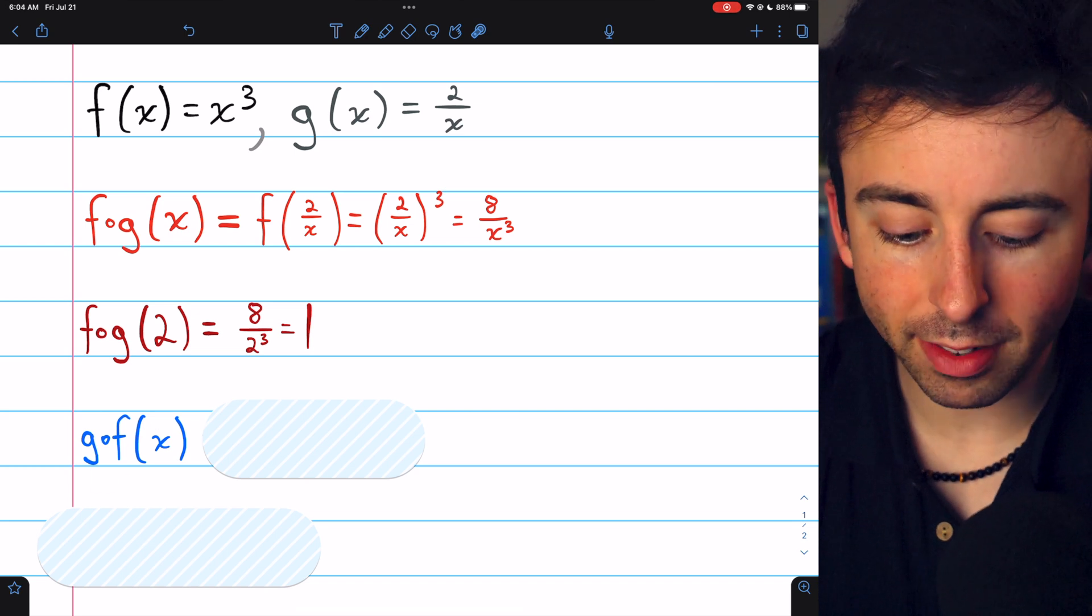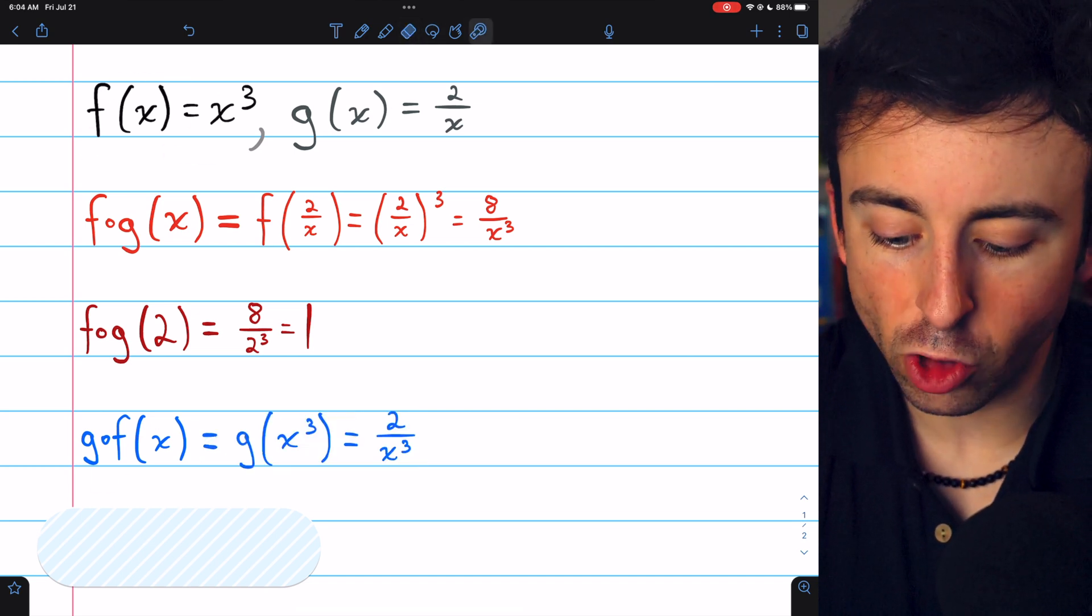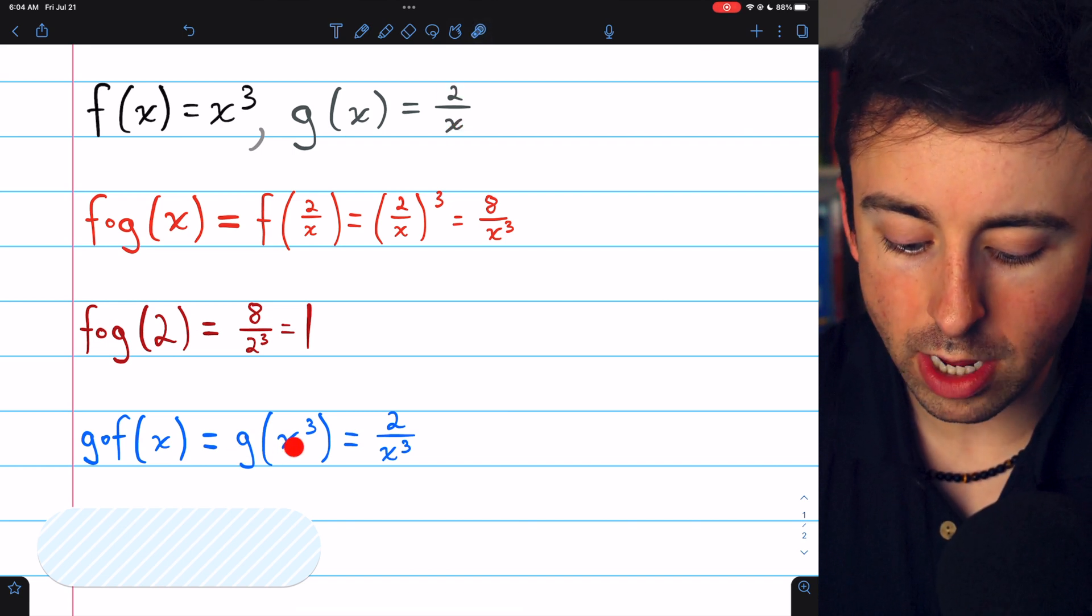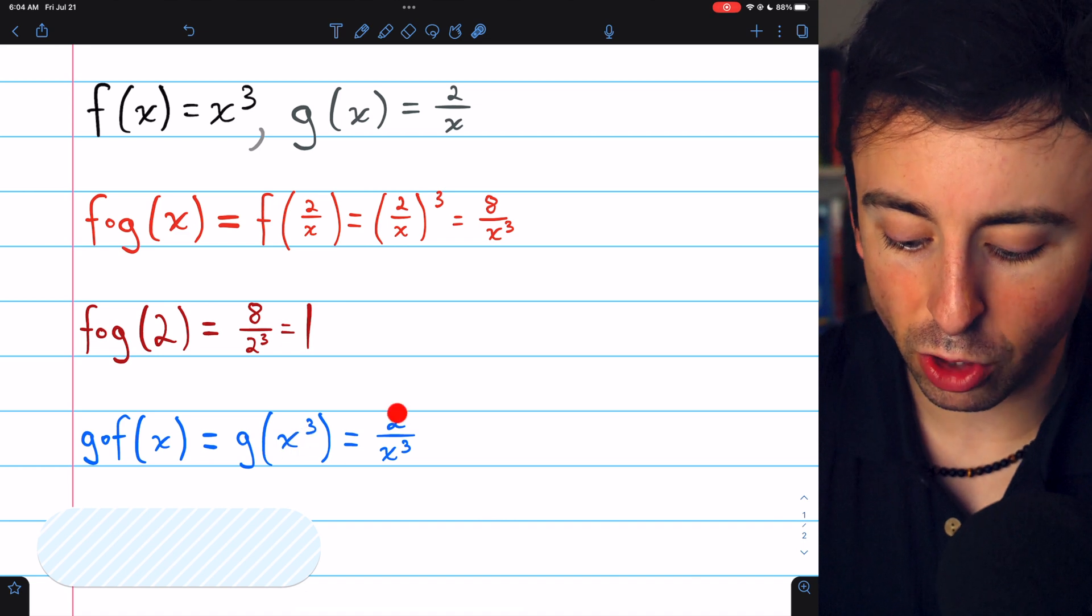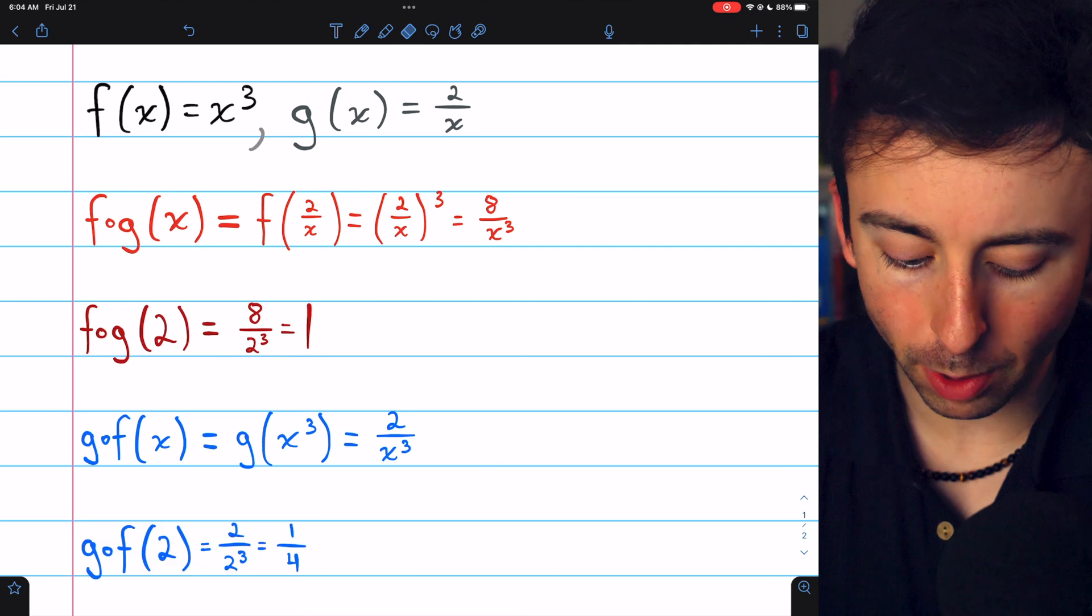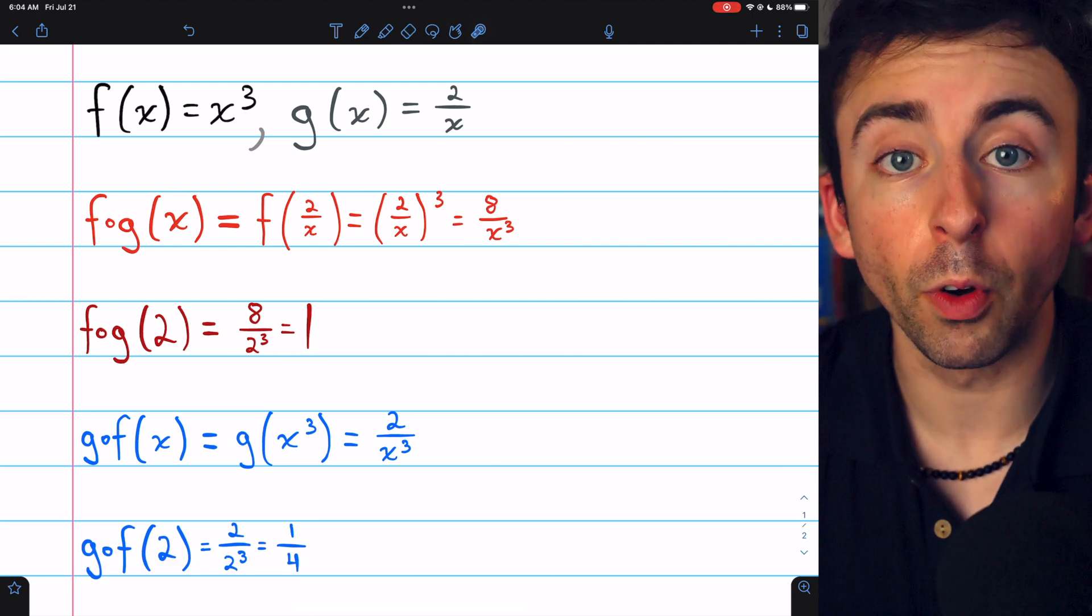To find g of f of x, we plug f(x), which is x³, into g. g puts the input under 2, so g(f(x)) is 2/x³. This means, for example, that g(f(2)) is 2/2³, or 1/4.